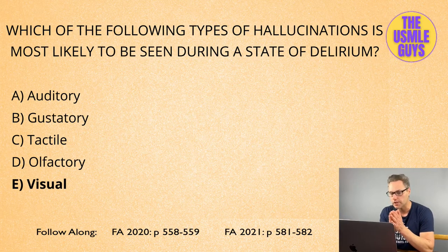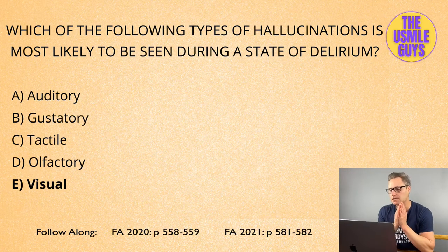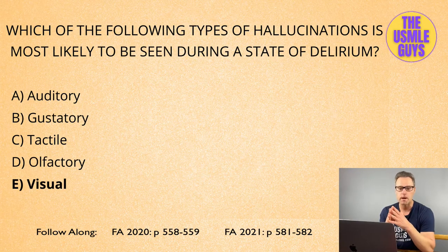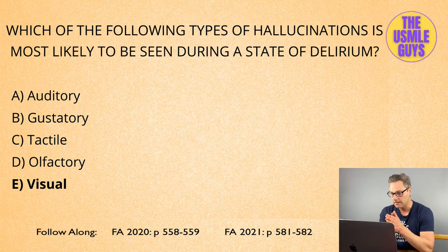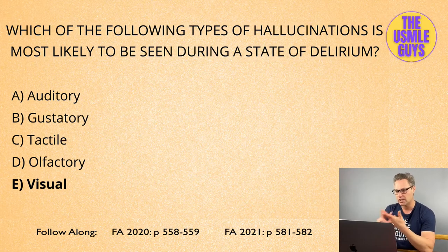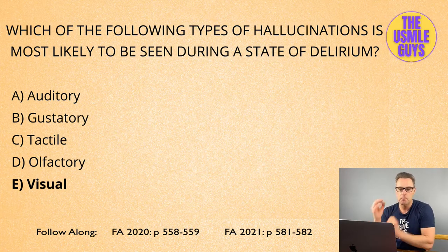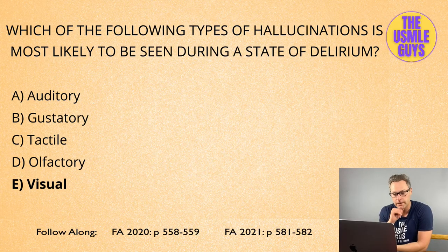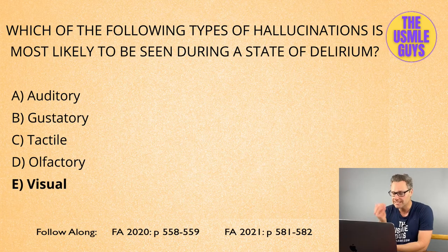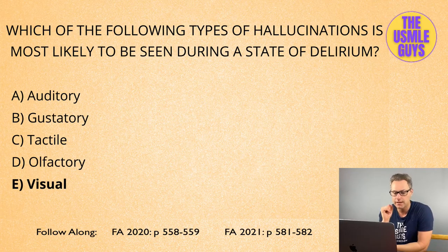The most common type of hallucination in a state of delirium is the visual hallucination. Delirium is a reversible state of up-and-down levels of consciousness that starts abruptly and is most often secondary to an identifiable medical illness — like an infection, trauma, substance abuse, or withdrawal. The main characteristics to look for include: disorganized thinking, hallucinations (most likely visual), cognitive dysfunction, agitation, misperceptions, and sleep-wake cycle disturbances.